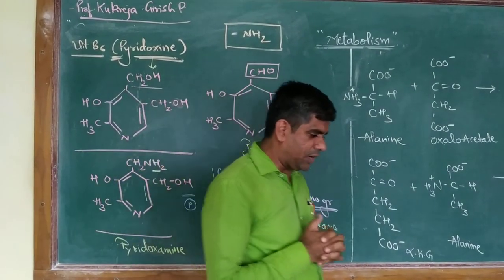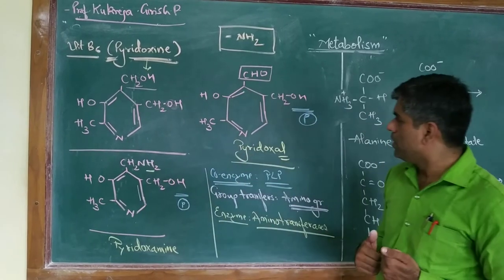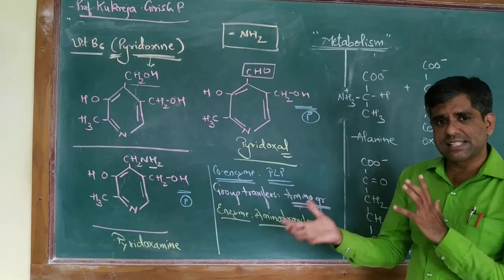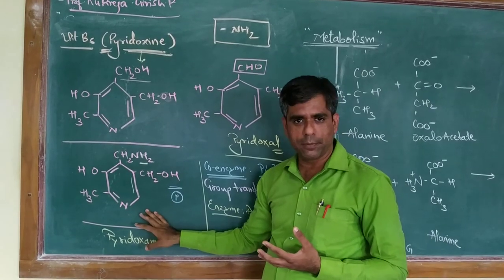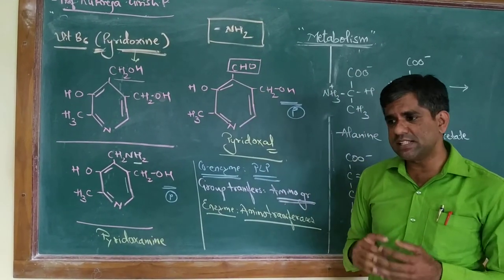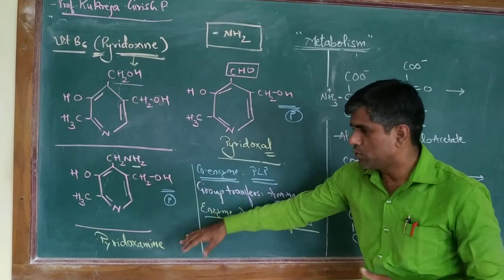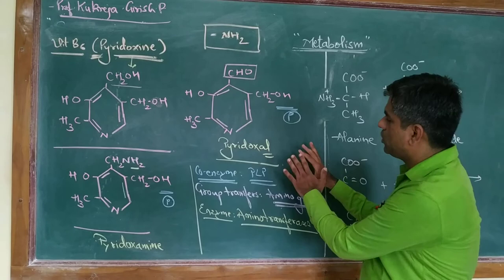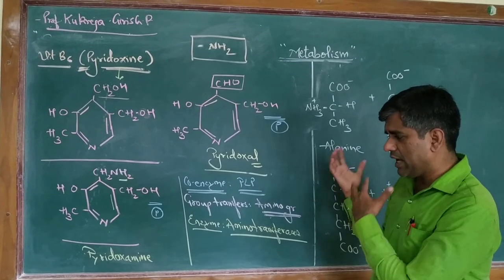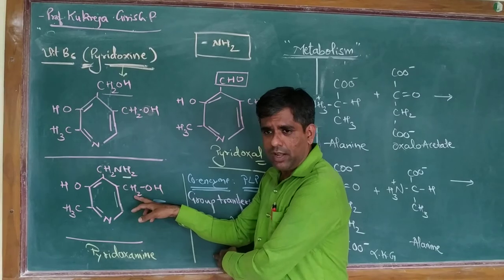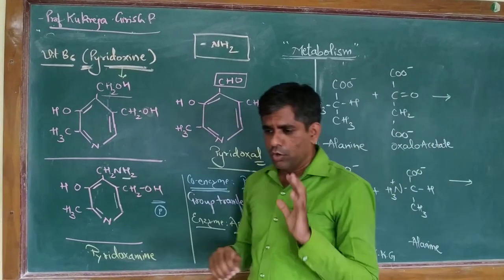What pyridoxal phosphate does is carry the amino group. A donor molecule donates its amino group to pyridoxal phosphate, which acts as the acceptor and gets converted to pyridoxamine phosphate. Then pyridoxamine phosphate acts as the donor, giving the amino group to an incoming keto acid, converting it into an amino acid. In this way, interconversions of amino acids are brought about by PLP.